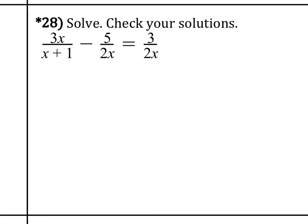So let me do number 28. We're going to solve this rational equation, and so we have 3x over x plus 1 minus 5 over 2x equals 3 over 2x.